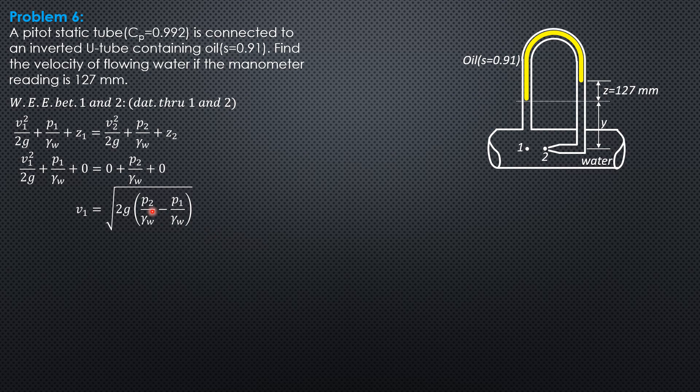Now to determine this pressure head difference, we sum up pressure from point 1 along the inverted U-tube down to this point here. It is also equal to the pressure at 2.